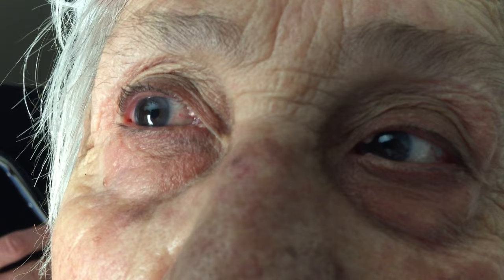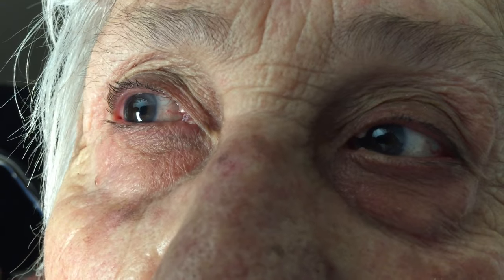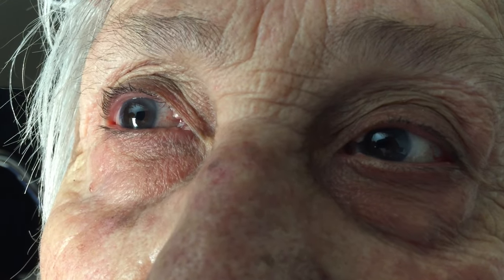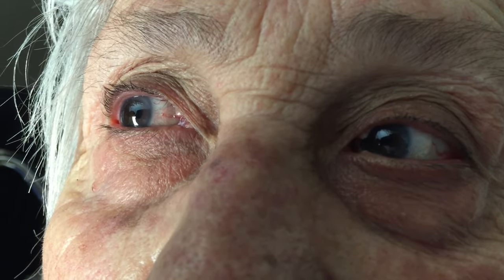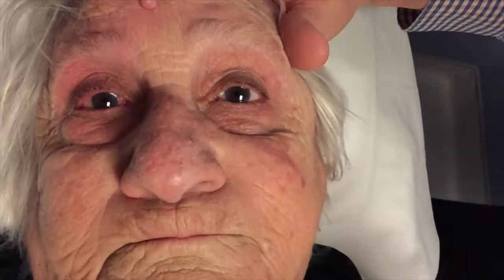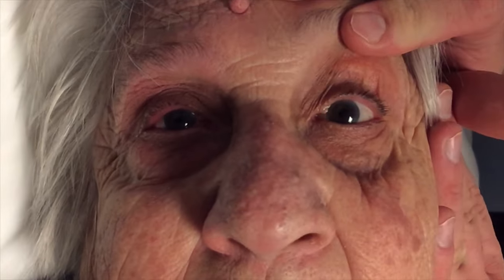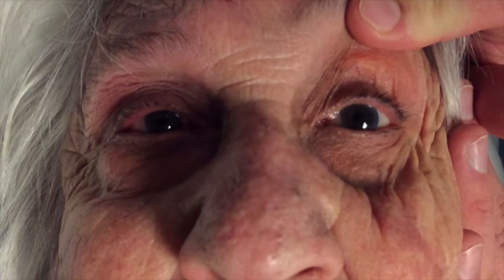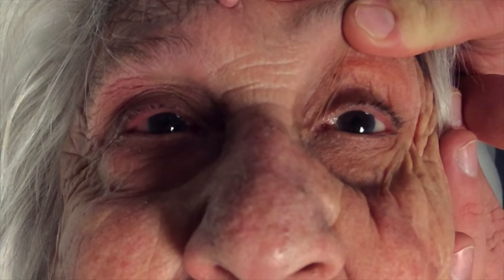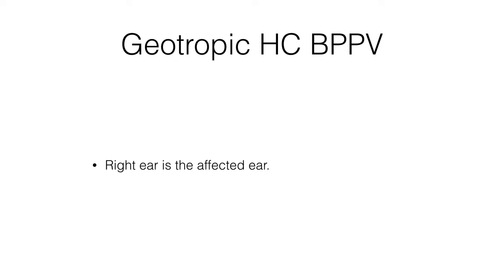In this lady, when her head is turned to the left side, she has purely horizontal nystagmus beating towards the ground — so this is geotropic nystagmus. When her head is turned towards the right, the nystagmus is more intense in amplitude and frequency. So the nystagmus on this more intense side is pointing towards the affected ear, which is the right ear. So she has right ear geotropic horizontal canal BPPV.